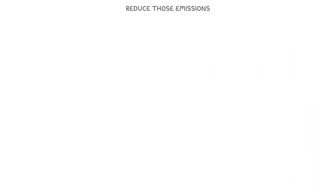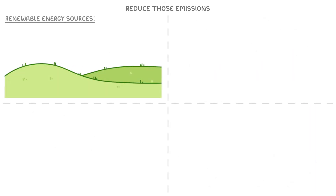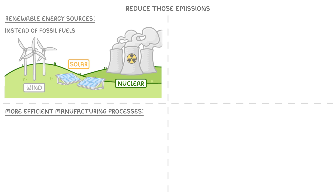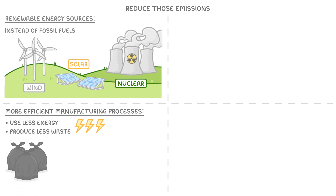One way to do this is to use renewable energy sources, like wind, solar, or nuclear energy, instead of using fossil fuels. Another option would be to use more efficient manufacturing processes, which require less energy in the first place, and also produce less waste.